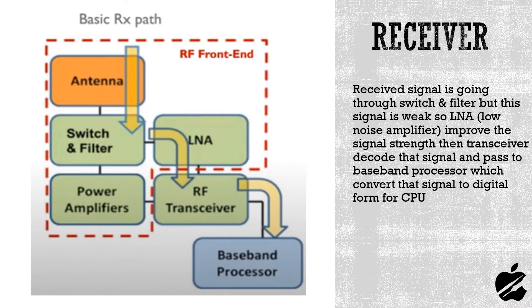The received signal goes through a switch and filter, but since it's a weak signal, a low noise amplifier improves the signal strength. Then the transceiver decodes that signal and passes it to the baseband processor, which converts it to digital for the CPU.